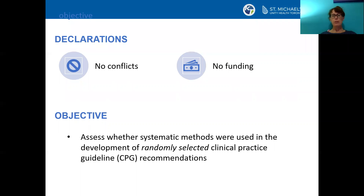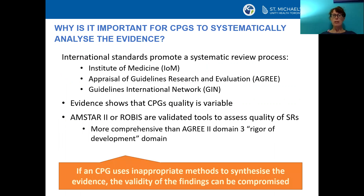Our primary objective was to assess whether systematic methods were used in the development of clinical practice guideline recommendations. Why is it important for clinical practice guidelines to systematically analyze the evidence? There are international standards to promote a systematic review process, such as those from the Institute of Medicine, AGREE, or the Guidelines International Network. Evidence shows that CPG quality is variable, but there are tools like AMSTAR or ROBIS, which are validated to assess the quality of systematic reviews. These are more comprehensive than the AGREE 2 tool domain 3 rigor of development.